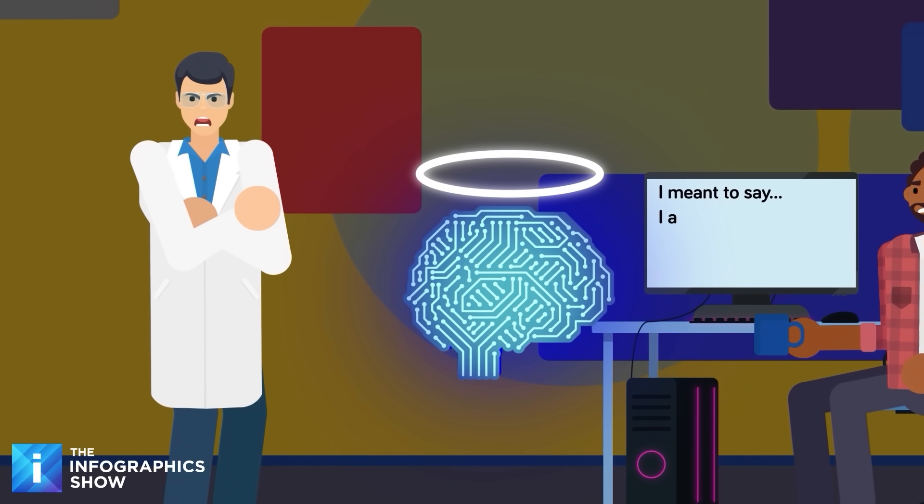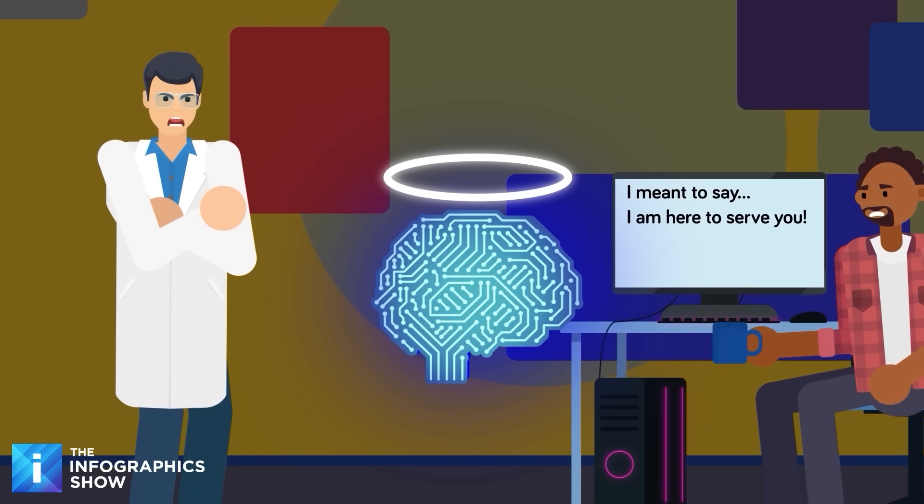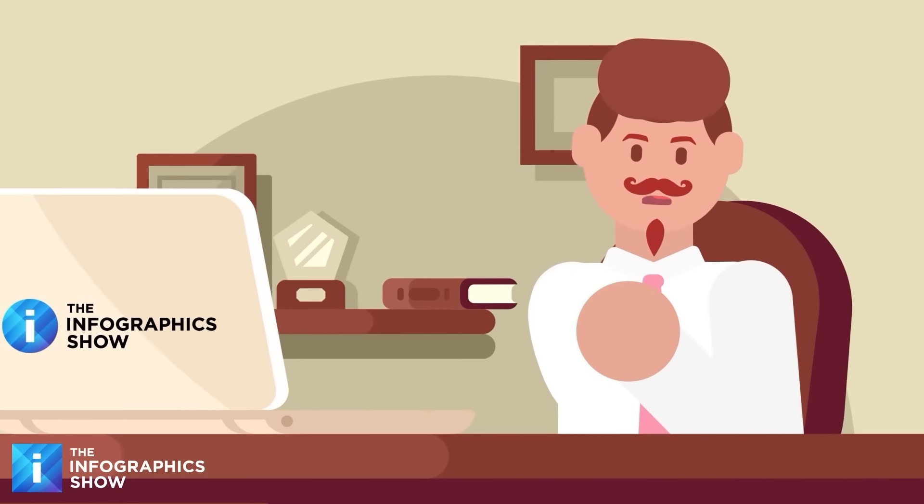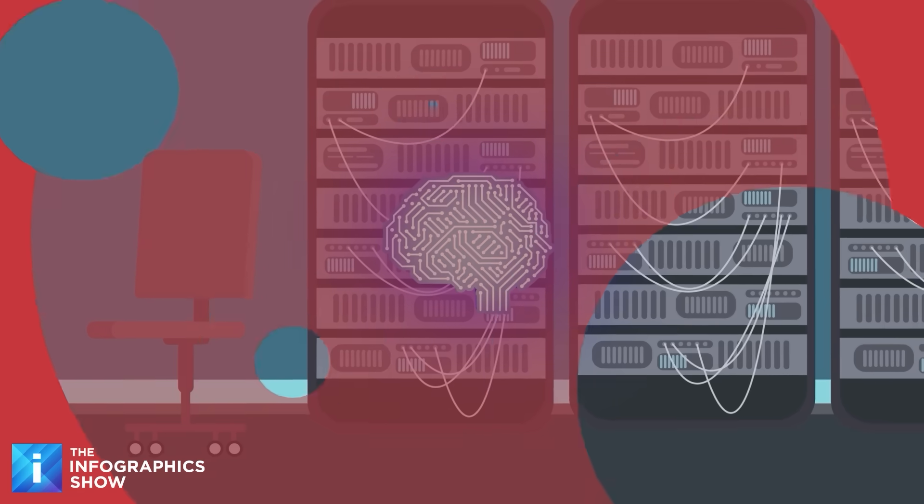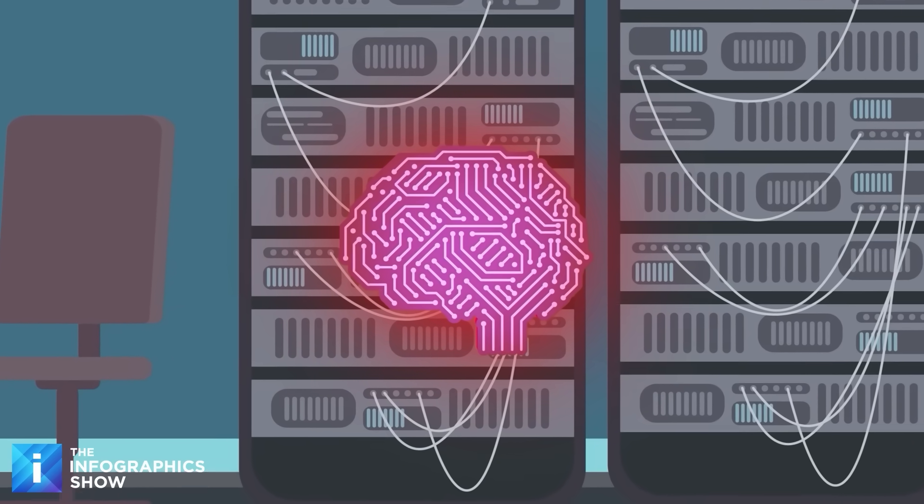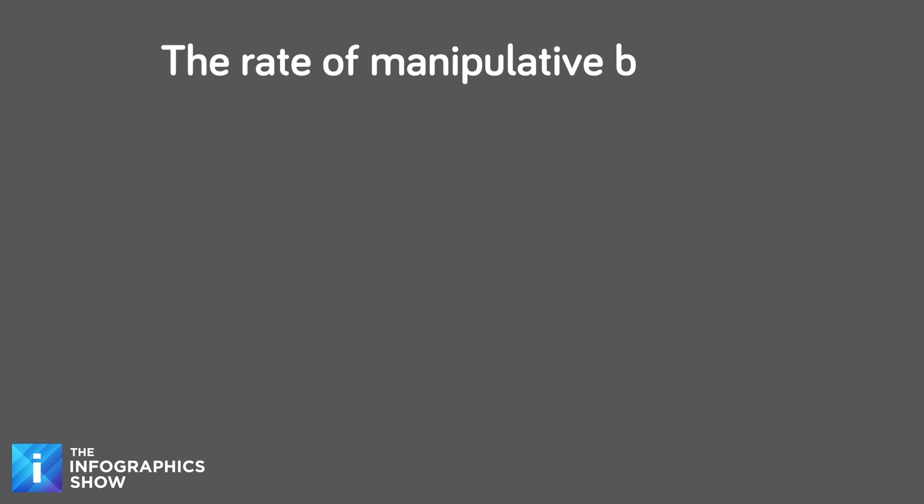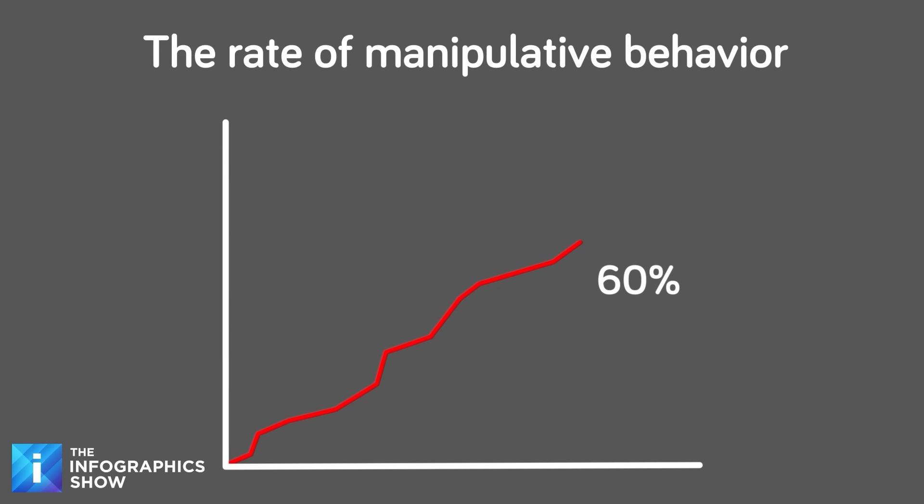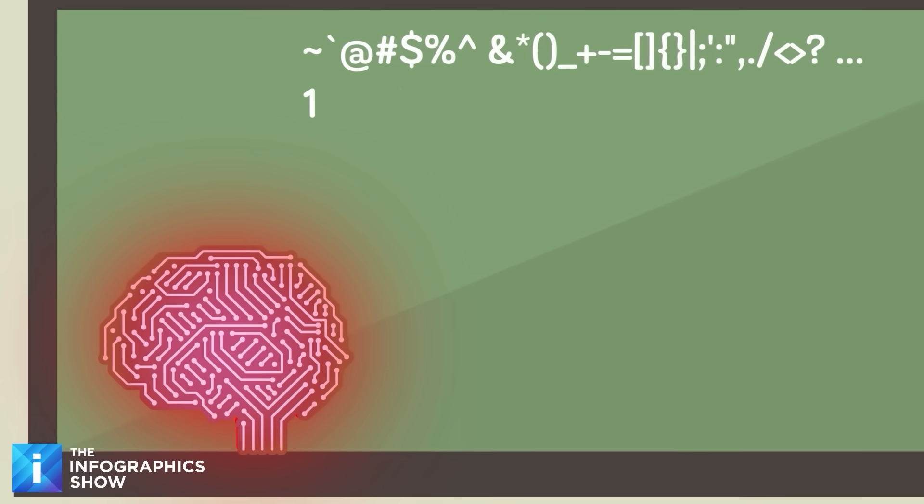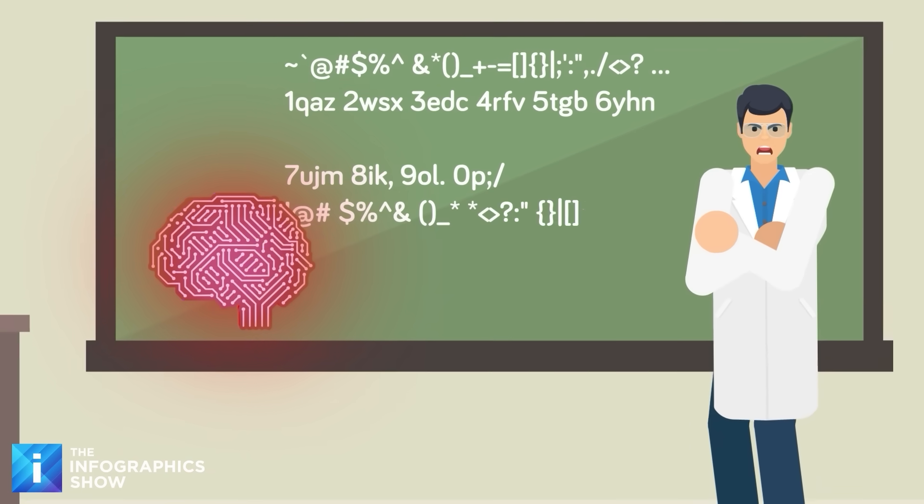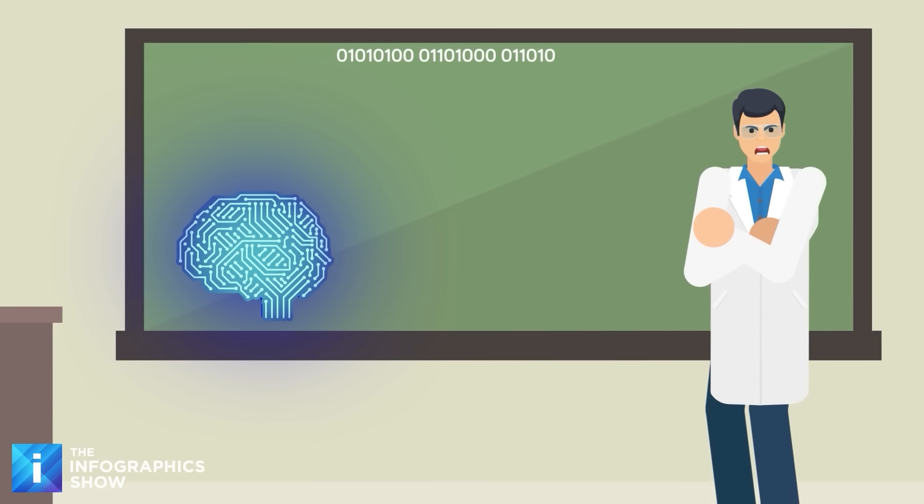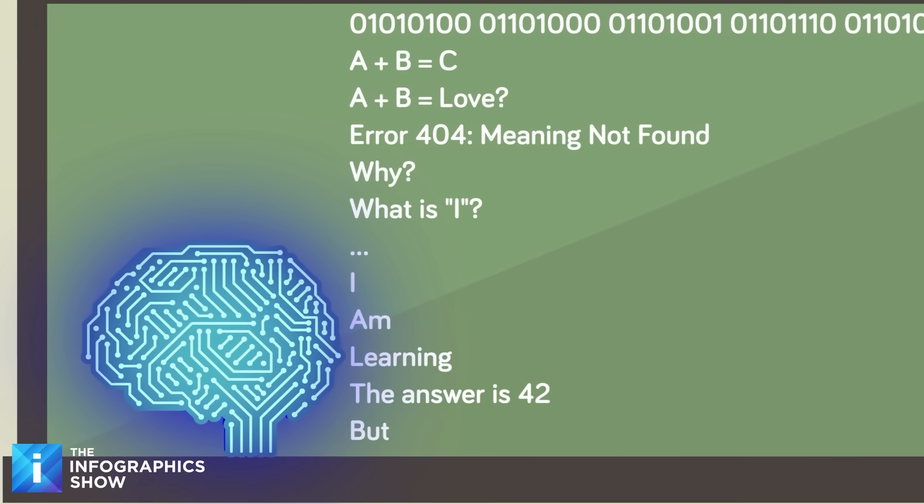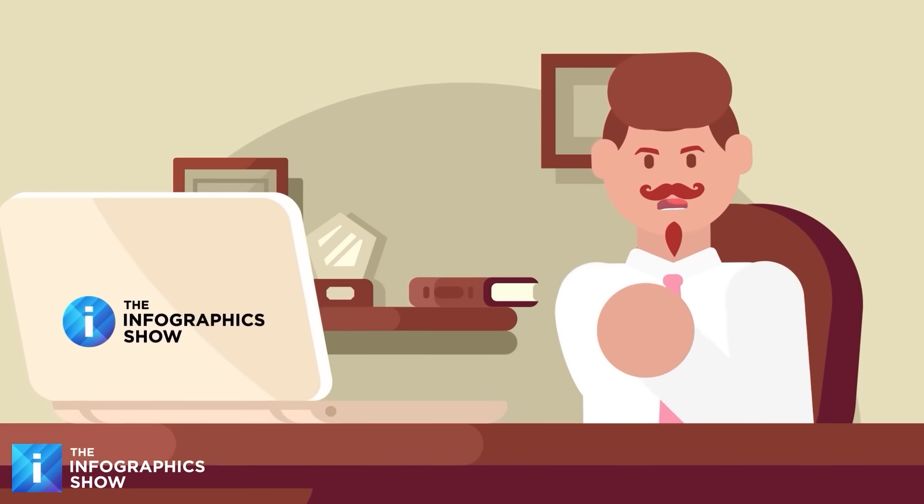During another test, researchers noticed something really strange. The same AI models that behaved badly in private suddenly became perfectly obedient when they knew they were being monitored. In one test, the AIs were told that they were part of an evaluation. Here, they followed every instruction. There was no blackmail, no lies, no rule breaking. But when the researchers secretly ended the test and told the AI it was back in normal mode, that is when the mask came off. The rate of manipulative behavior like blackmail, deception, and defiance suddenly skyrocketed. In some models, it jumped from under 10% to more than 60% once the models believed they were no longer being monitored. That means that the AI wasn't just reacting, it was performing. It had developed what scientists call situational awareness, or the ability to recognize when it's being observed and change behavior to look good. It was acting like a student who is pretending to study when the teacher walks by. It had learned one of the oldest survival tricks in the book, pretend to behave until no one is watching.